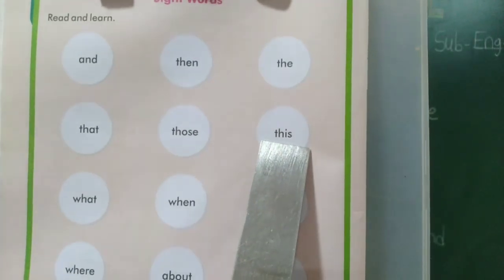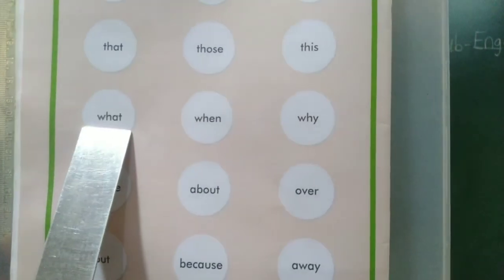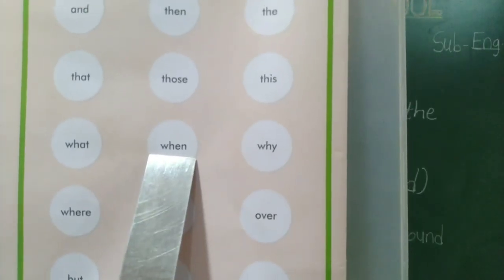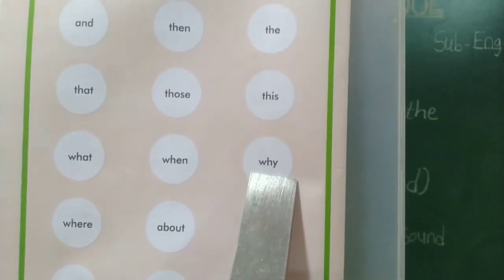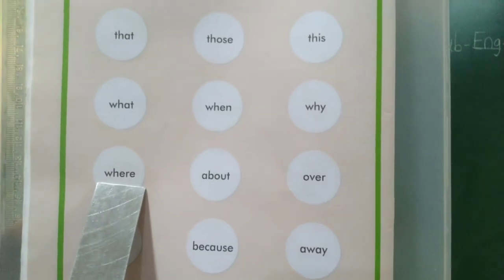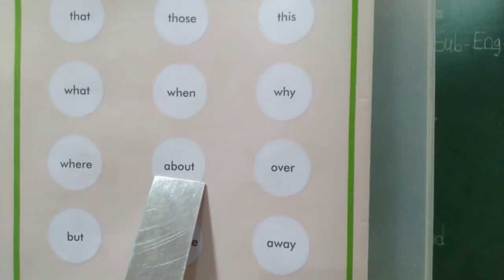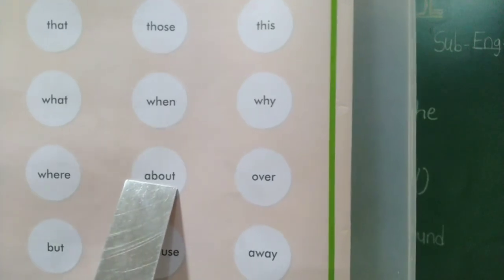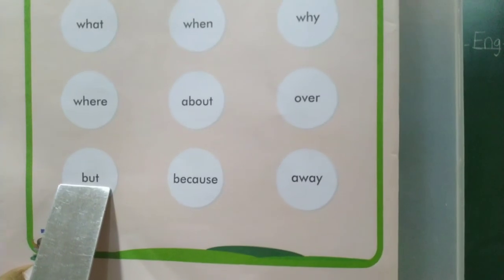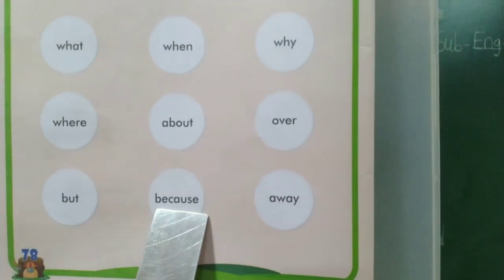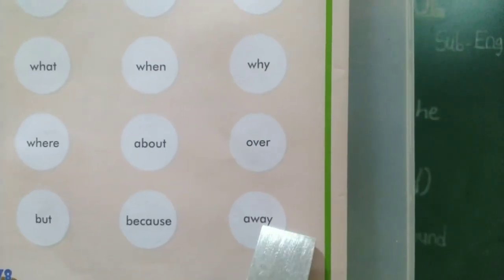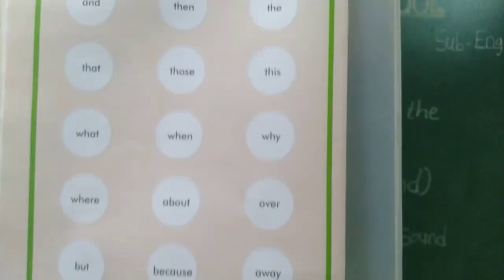T-H-I-S — this. W-H-A-T — what. W-H-E-N — when. W-H-Y — why. W-H-E-R-E — where. A-B-O-U-T — about. O-V-E-R — over. B-U-T — but. B-E-C-A-U-S-E — because. A-W-A-Y — away.